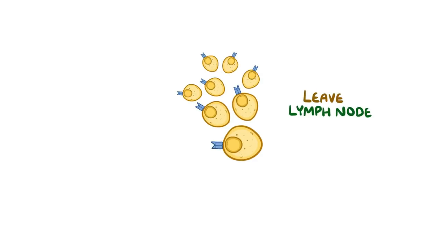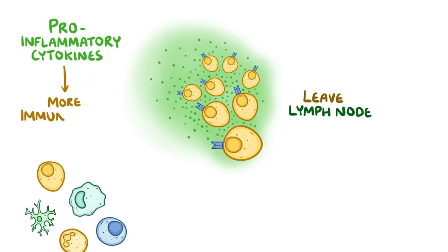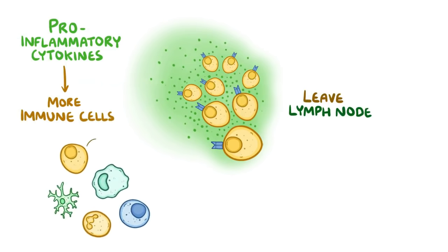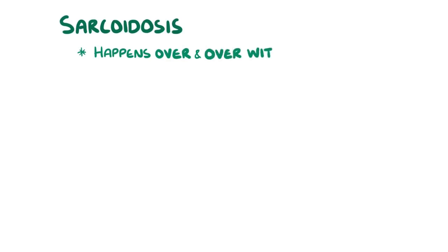These T cells start secreting pro-inflammatory cytokines, or signalling molecules, and they then recruit more immune cells like additional T cells and macrophages. In sarcoidosis, though, this process unfolds over and over throughout the body without the presence of a specific pathogen that the body is trying to destroy.